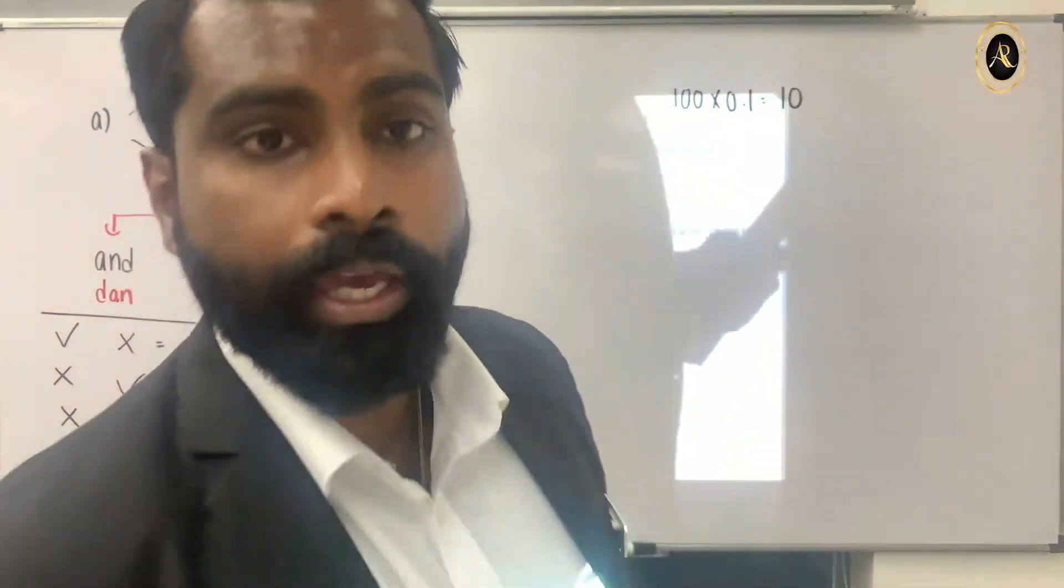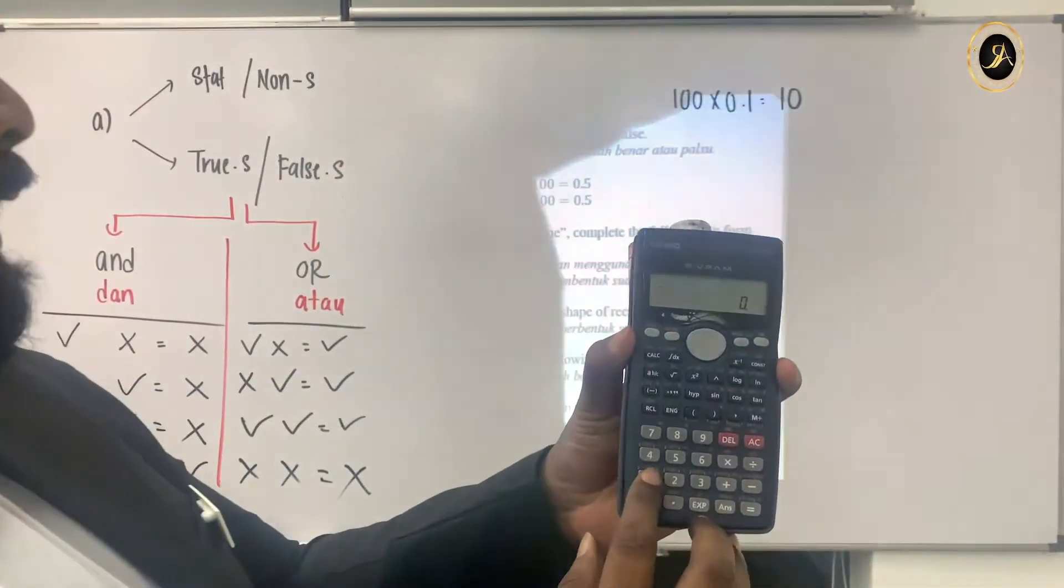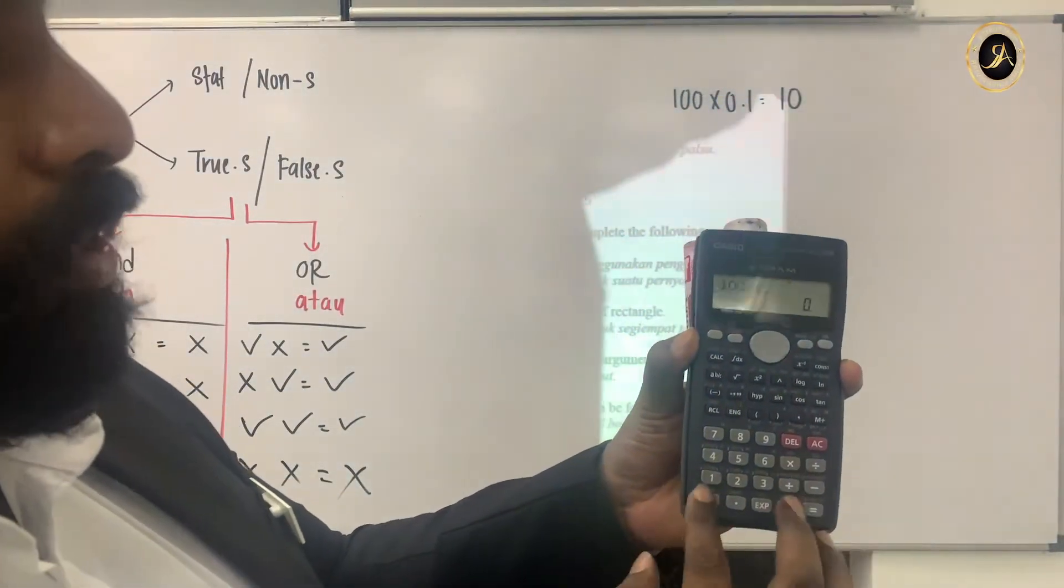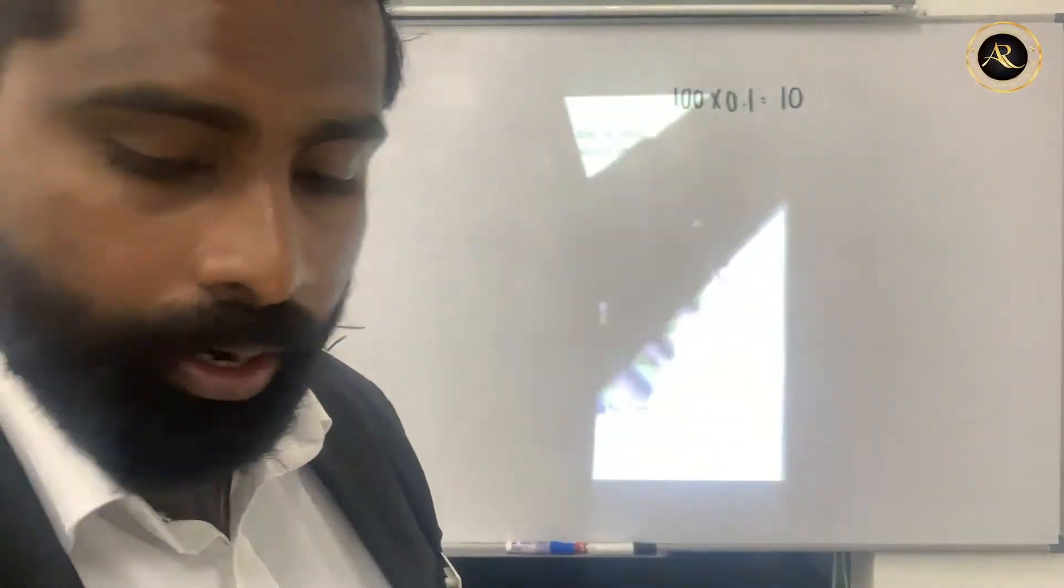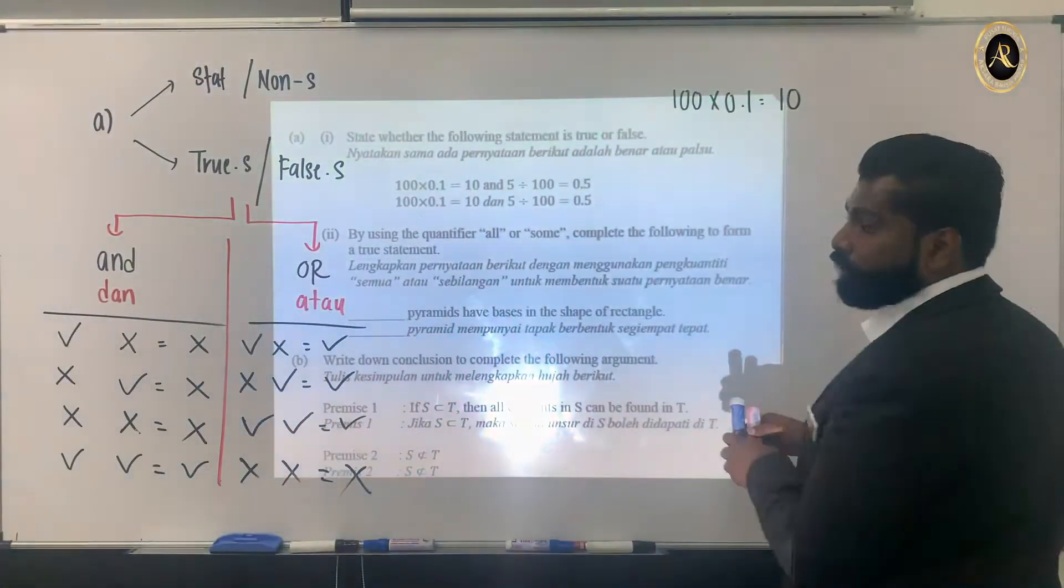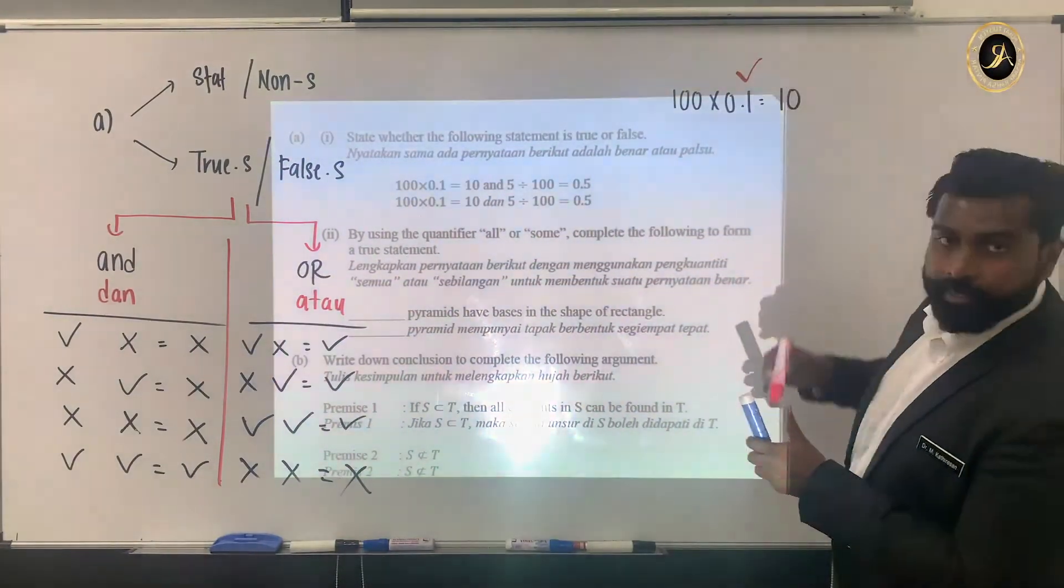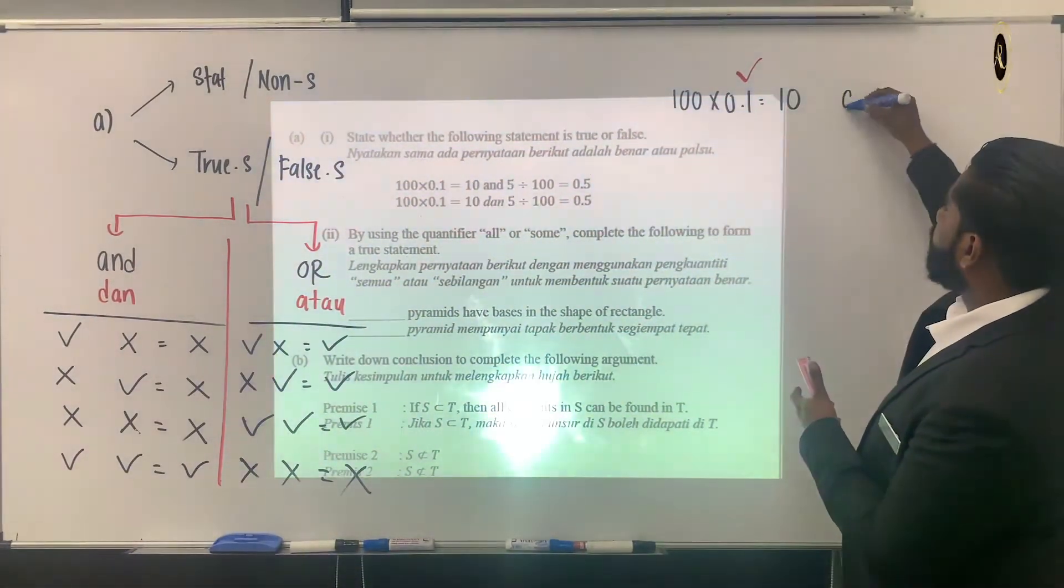If you have a calculator, you can press 100 times 0.1 and you will get 10. Is it correct or wrong? Yes, correct. So this one is correct, am I right? Then they counter 'and'.